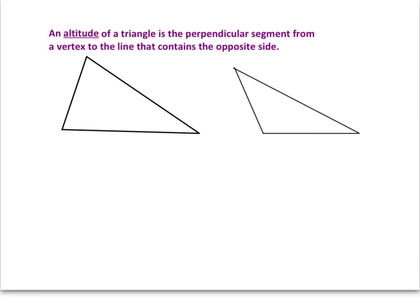Next, we're going to look at an altitude of a triangle. That's a term you may have heard before — it's also sometimes just called the height of a triangle. But it's important that we define it, because it can get a little bit tricky. An altitude is a perpendicular segment from a vertex to the line that contains the opposite side. For example, if I was drawing the altitude from this vertex, it would be perpendicular to the opposite side — straight down, as if you dropped a ball straight down to the opposite side, meaning perpendicular to that opposite side.